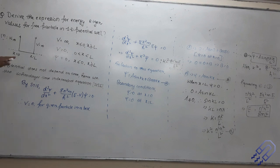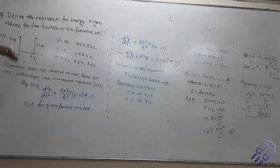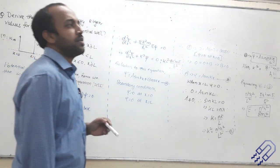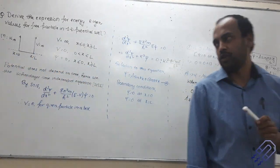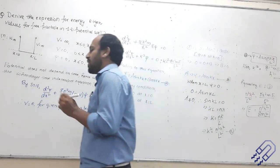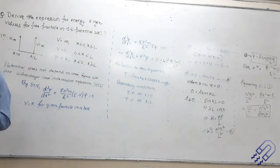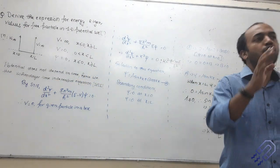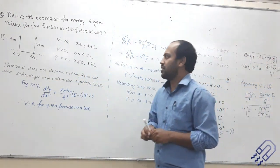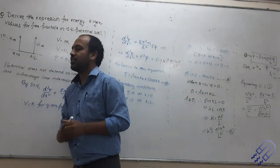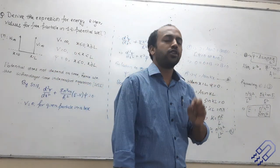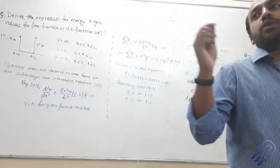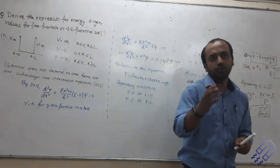Here we are talking about something which we call particle in a box. What exactly do I mean by particle in a box? In general, if you are considering a classical picture, it means a small plastic ball or a cricket ball confined within a cardboard box. But that particle is not what we are considering here. Here we are saying we might have an electron confined in an atom, or a neutron or a proton confined in a nucleus.